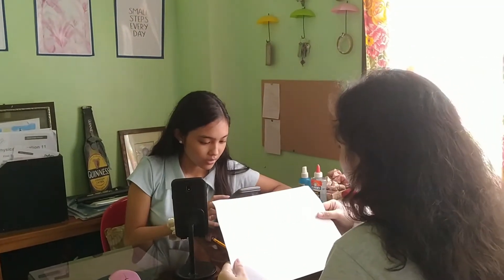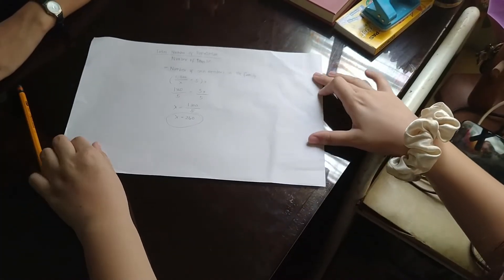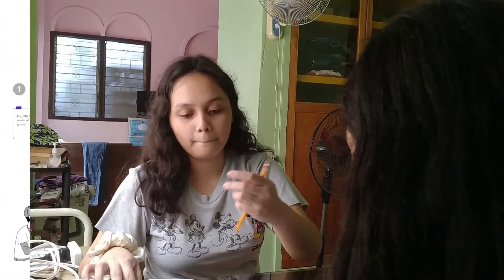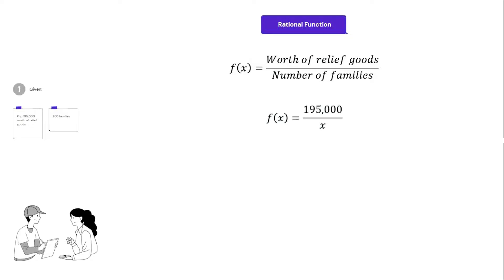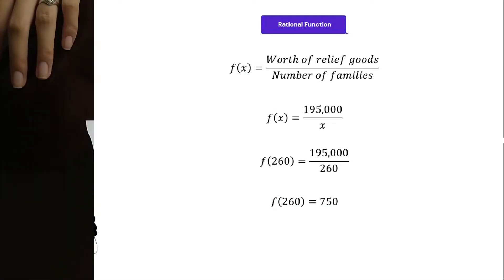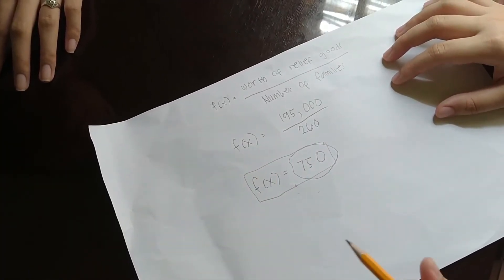We have a total budget of P195,000 and we'll be giving out a total of 300 relief goods, each worth P650. Since there are 260 families, to get the exact worth of relief goods given to each family, the function would be F(x) is equal to worth of relief goods over number of families. Substituting the given values, the rational function will be F(x) is equal to 195,000 over X. Since there are 260 families, 260 will be substituted to X, making F(x) equal to 195,000 divided by 260, which equals 750. Each family will receive 750 pesos worth of relief goods.